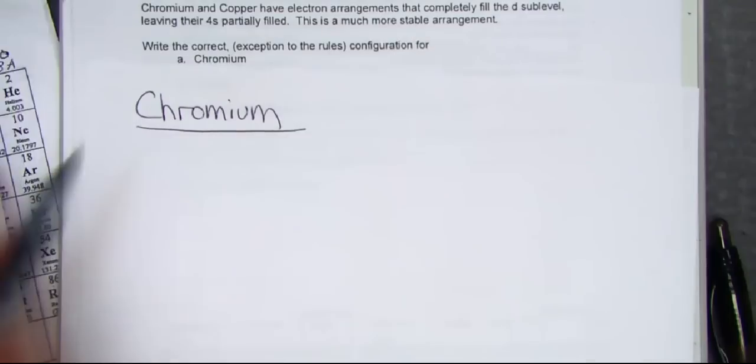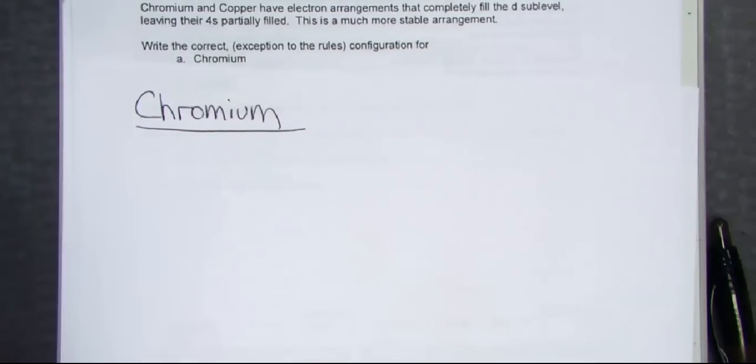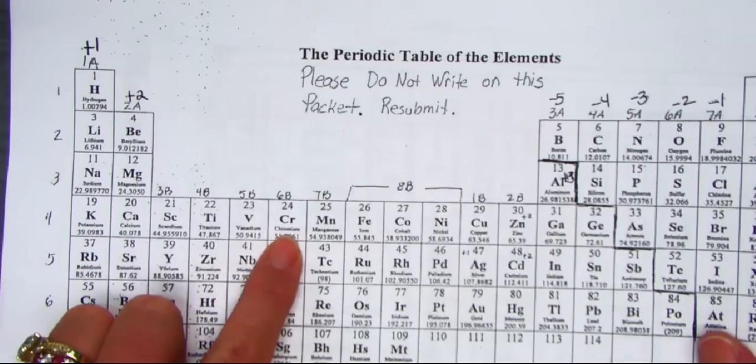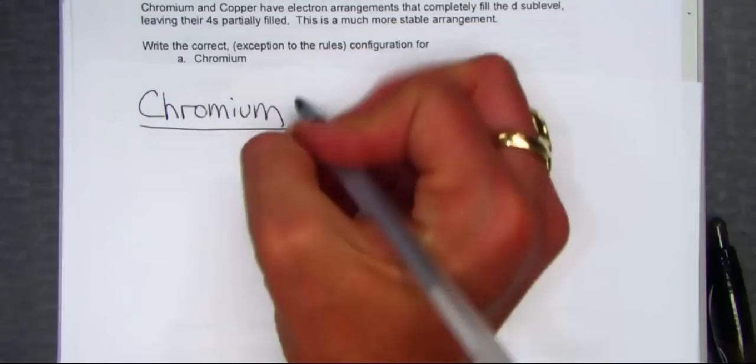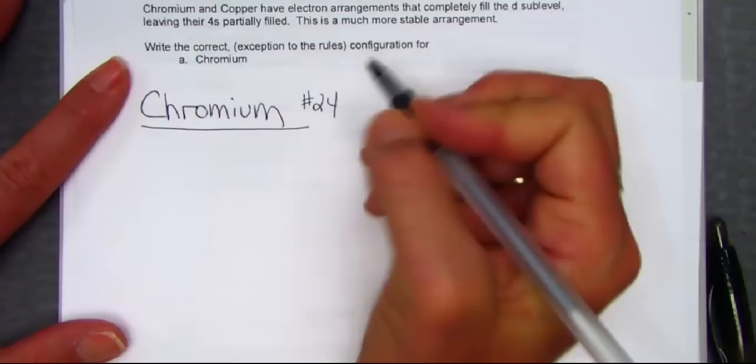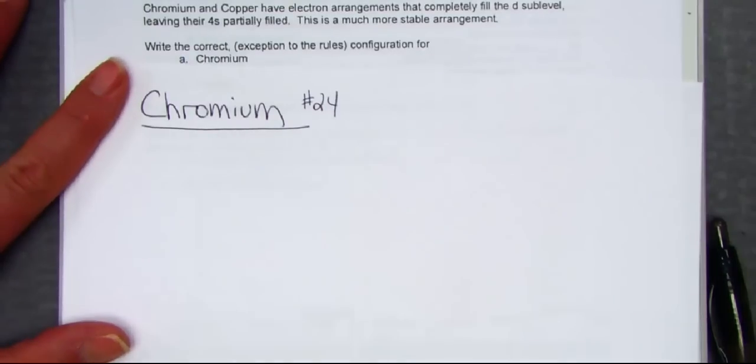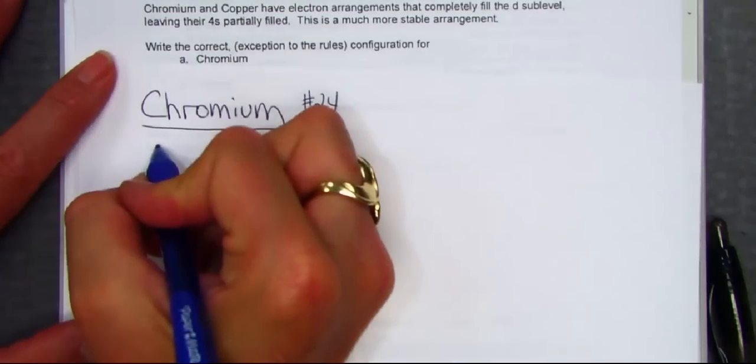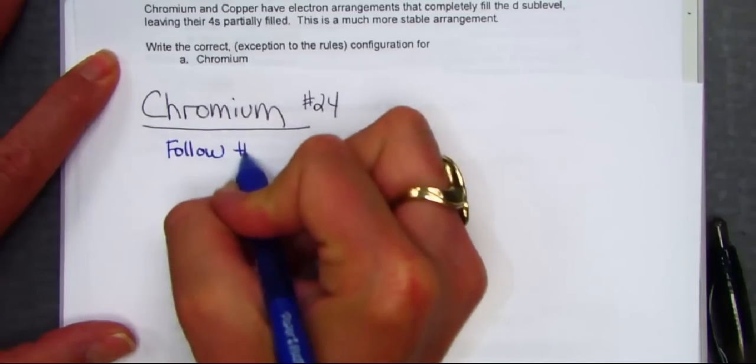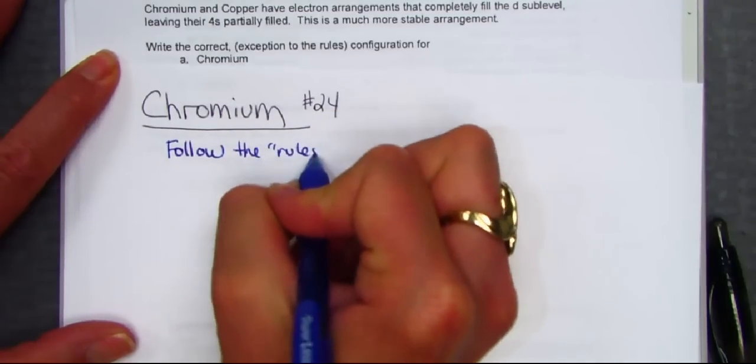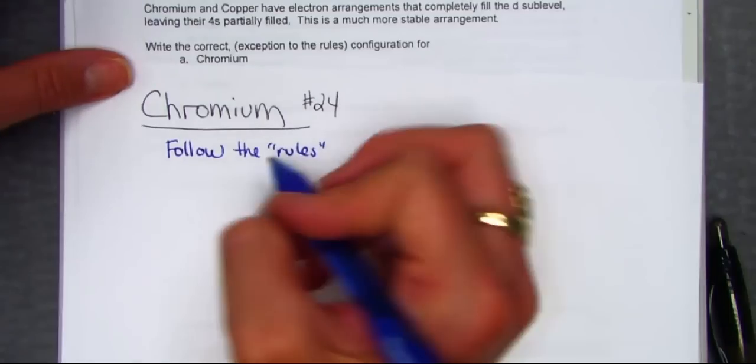Now, chromium is a transition metal. Chromium is number 24 on our periodic table. So, we have 24 electrons to write for. Let me, as we should, start out and follow the rules. If we were to follow the rules for writing chromium, here's what it would look like.